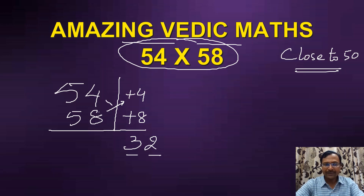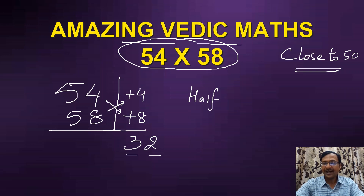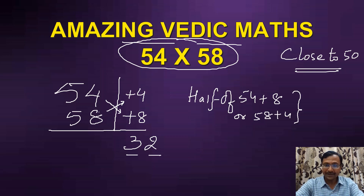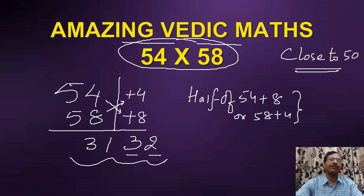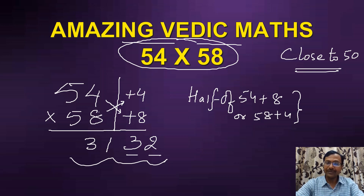If you add 58 and 4 you get 62, and if you add 54 and 8 you get the same number, 62. But you have to take half of that — half of either 54 plus 8 or 58 plus 4. In either case it will be 31, because half of 62 is 31. So the remaining part of the answer is 31, and the product of 54 and 58 is 3132. You can pick up the calculator and verify — you'll get 3132 and you'll be really surprised how we are doing it.